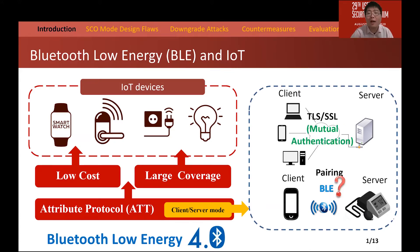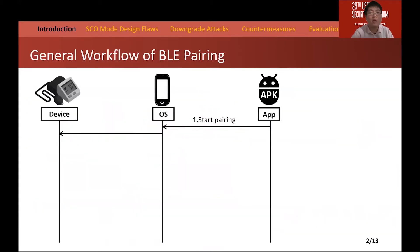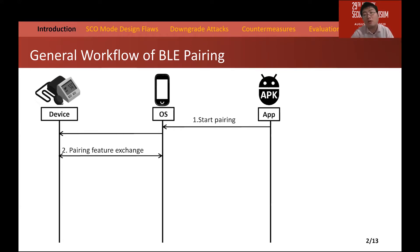We know that TLS/SSL can achieve mutual authentication, but how about in BLE? Can BLE also achieve mutual authentication? Let's look at the workflow of the pairing process and find out. This is the workflow of BLE pairing. Initially, an app or the mobile has to start the pairing process. Afterwards, two devices exchange pairing features, which indicate what type of pairing method the two devices support.